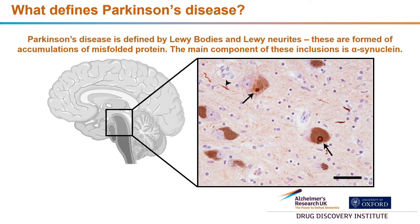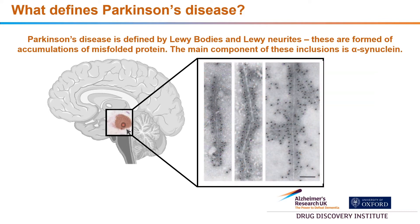From a pathological perspective, there are distinct characteristics that define Parkinson's disease, and these are called Lewy bodies, shown here, and Lewy neurites. These have been shown to be mainly composed of a protein called alpha-synuclein. If you look closer into what these Lewy bodies contain, the alpha-synuclein is highly aggregated into insoluble filamentous forms. It is thought that these aggregates are toxic to cells and are what cause the cells to eventually die in Parkinson's disease.